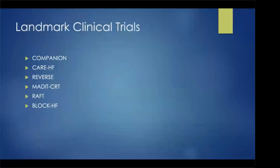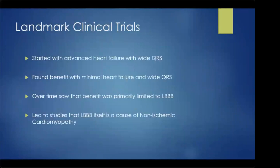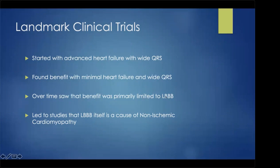These guidelines are based on six landmark trials. In general, these trials started with patients with advanced heart failure and a wide QRS, finding benefit there, then found benefit in those with minimal heart failure and a wide QRS. Over time, they found that benefit was primarily limited to those with left bundle branch block — a specific form of wide QRS.